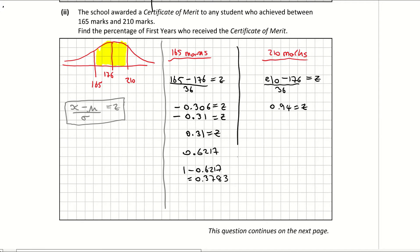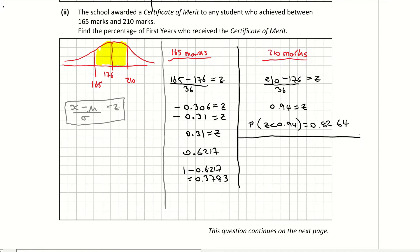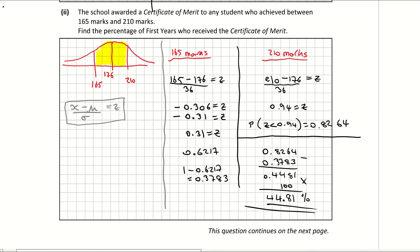Coming over now to the 210 marks — I got my Z score to be 0.94. The probability of Z being less than 0.94 is, from my log table, 0.8264. All I have to do now is subtract my two answers from each other to get that middle portion: 0.8264 minus 0.3783 gives me 0.4481. The question said find the percentage, so multiplying by 100 gives me 44.81%. That is part two.